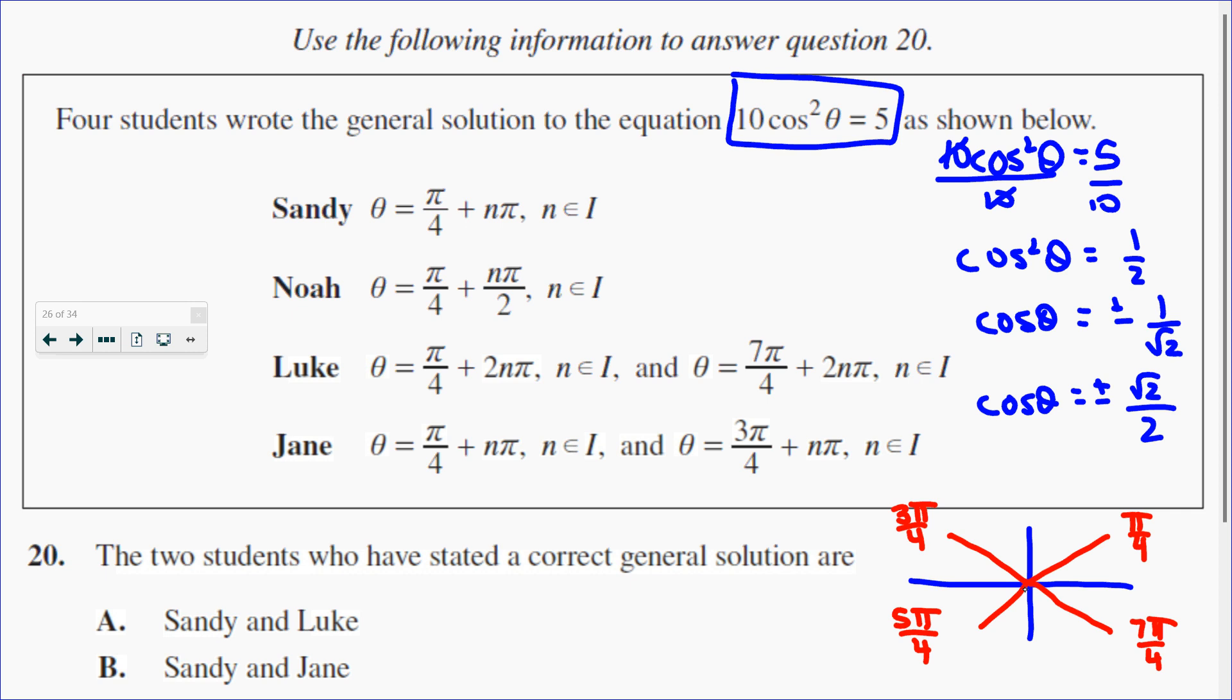It would forget about the 3 pi over 4 and the 7 pi over 4. So Sandy is not correct.